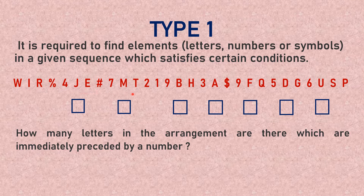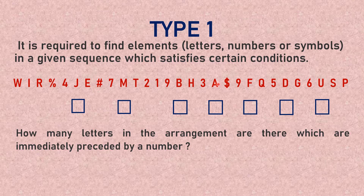In this series you can find alphabets like W, I, R, J, E, M, T, V, H, A, F, Q, D, G, U, S, P. In addition you also find numbers such as 4, 7, 2, 1, 9, 3, and so on. Plus you have some symbols like a percentage sign, a hash sign, and a dollar sign. So an alphanumeric series includes alphabets, numbers, and symbols. Every letter, number, or symbol that is part of the series is known as an element of that series.